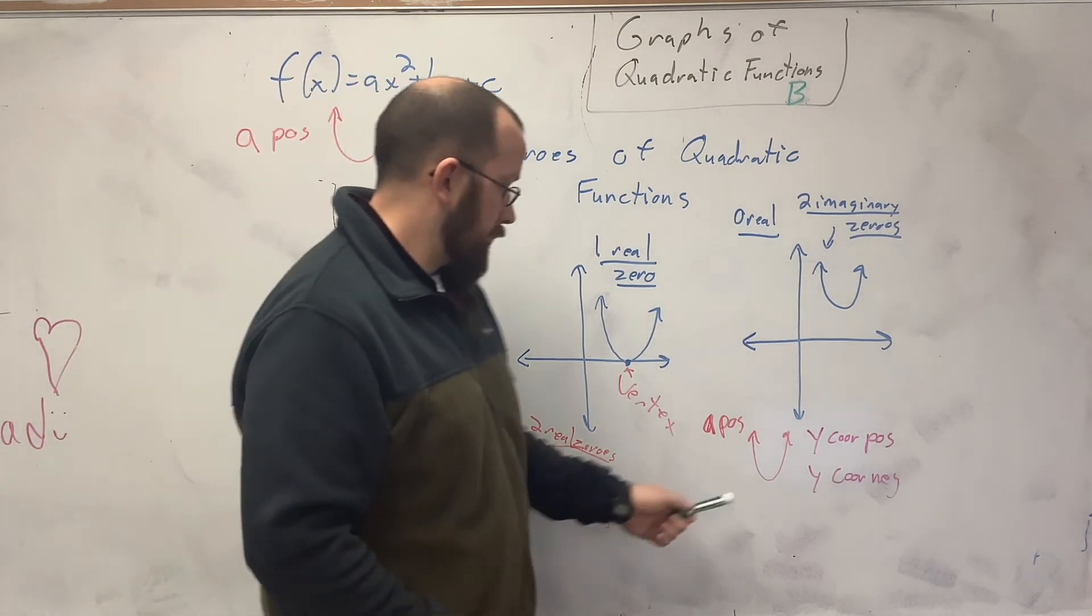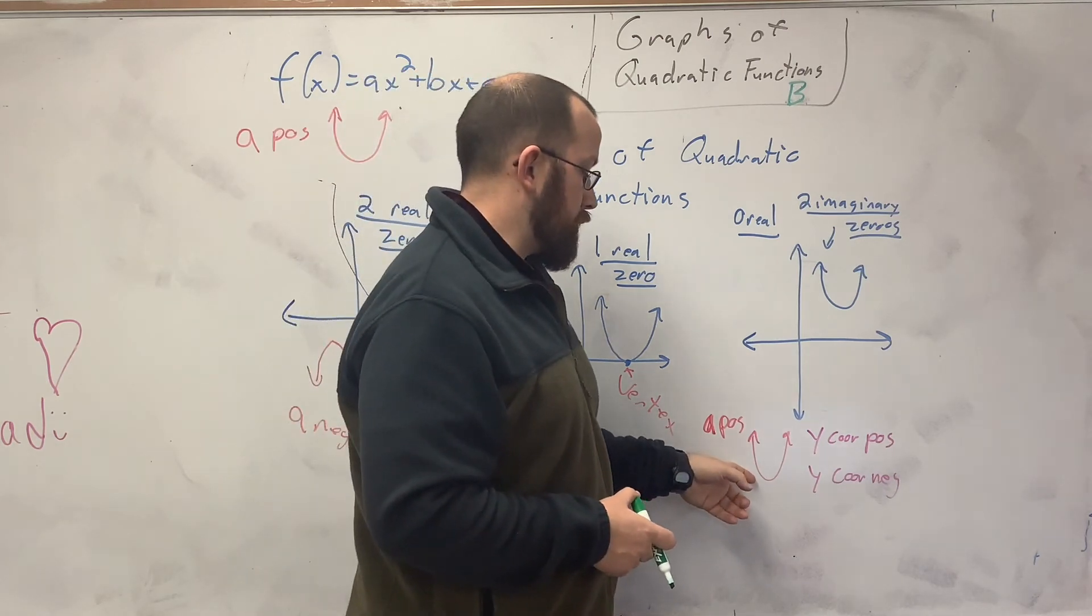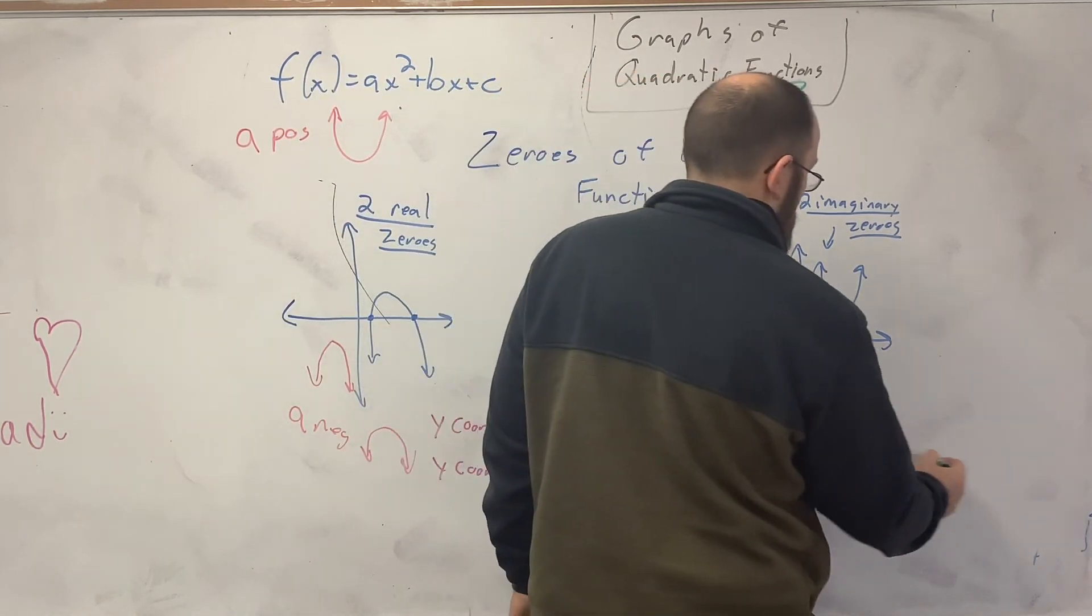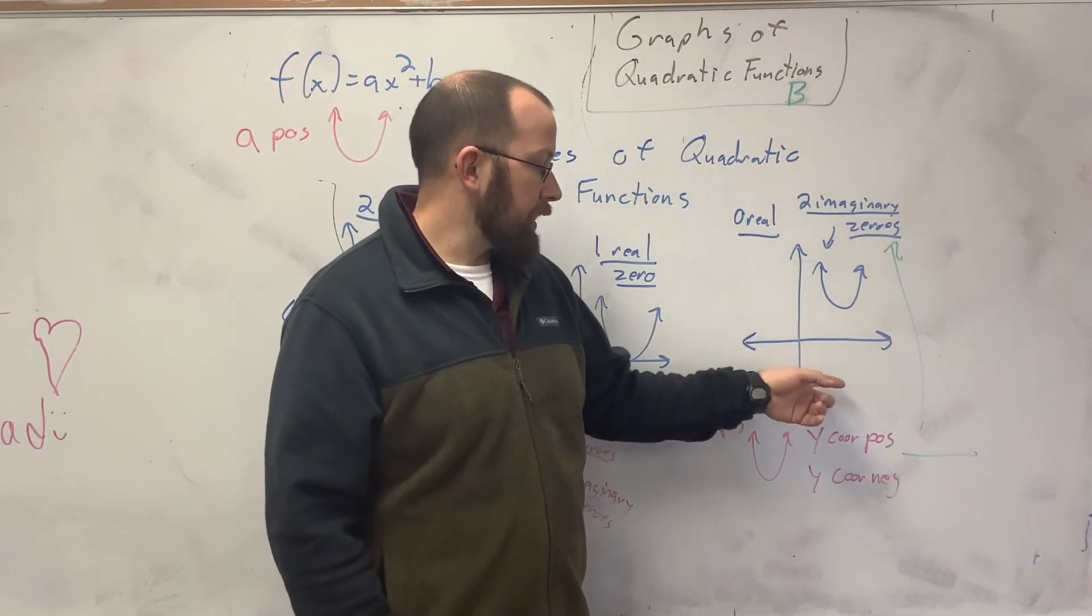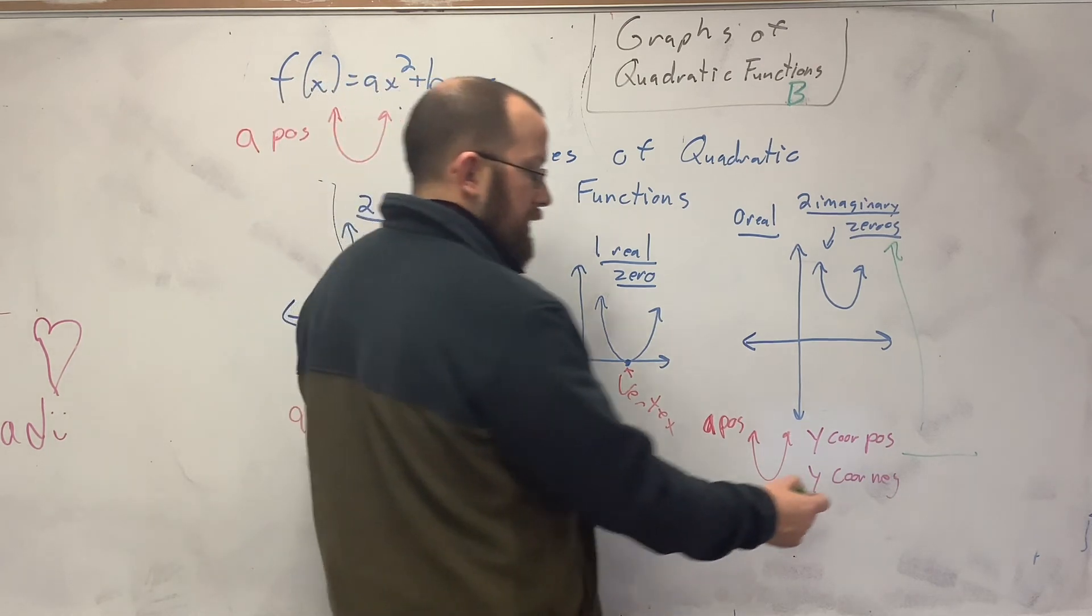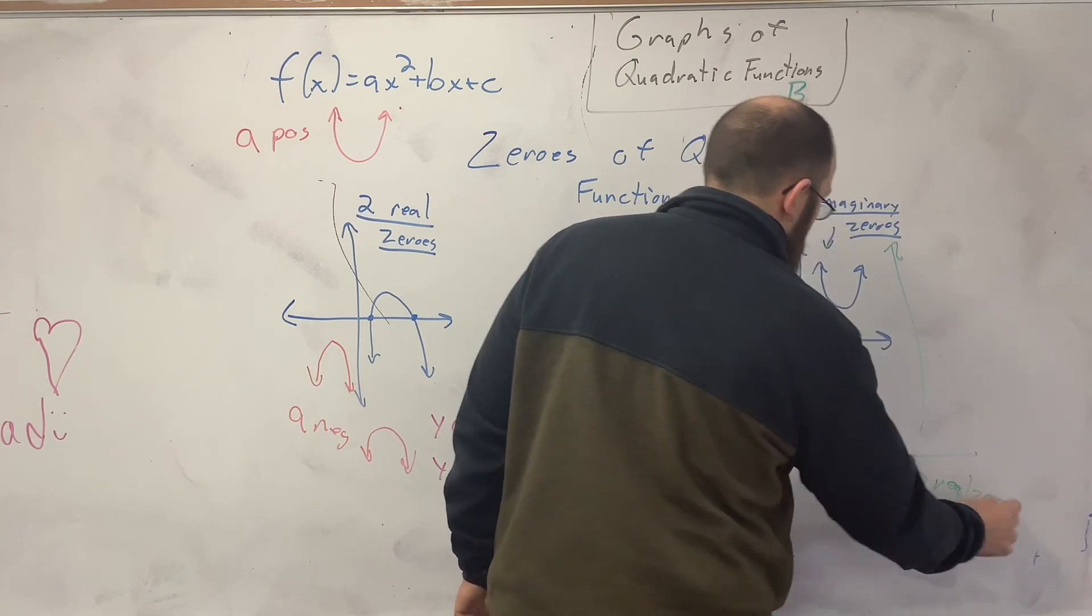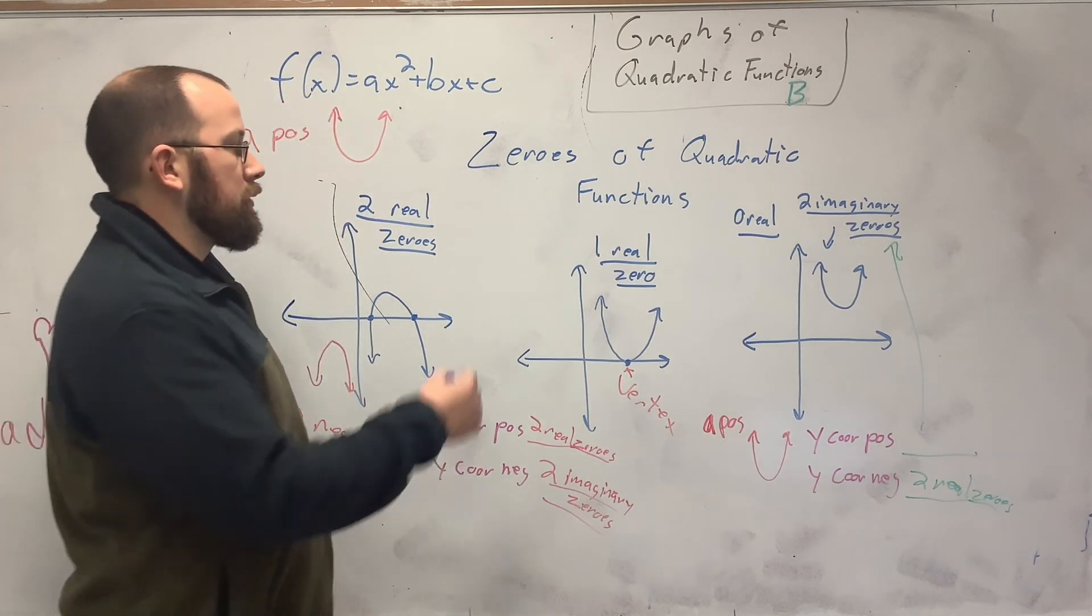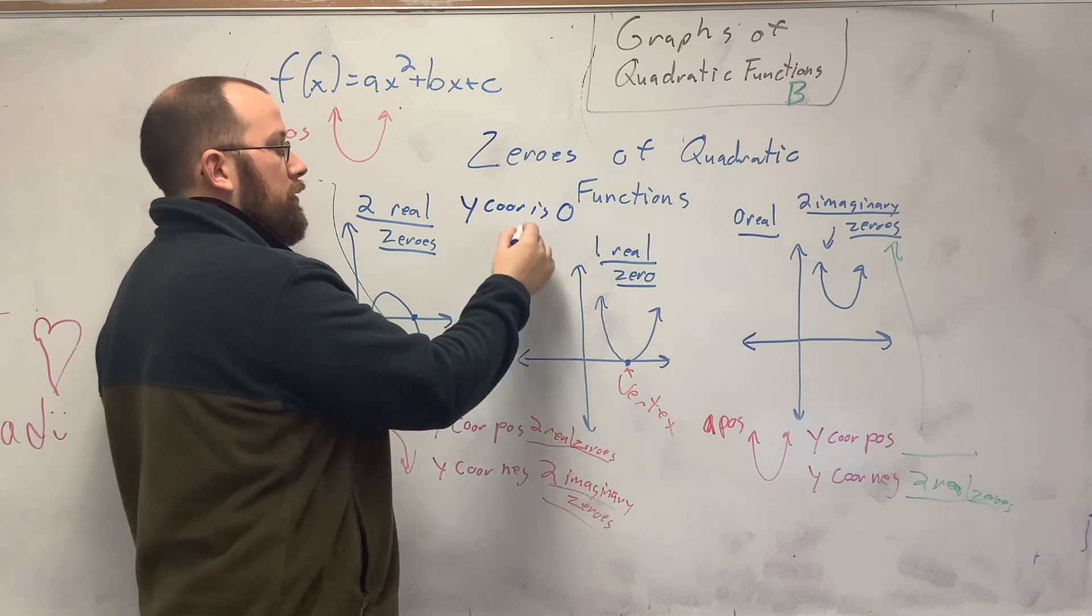So let's come over here. When A is positive, which is your leading coefficient, and you have a smiley face, so right here, I have a smiley face. My y-coordinate is positive. I'm going to have two imaginary zeros, because if I have a smiley face, my y-coordinate has to be negative in order for it to go through the x-axis. And that's what this is going to be. This is going to be two real zeros. So that's just more of a thought thing to think of. And if your y-coordinate is zero, then you have one real zero.